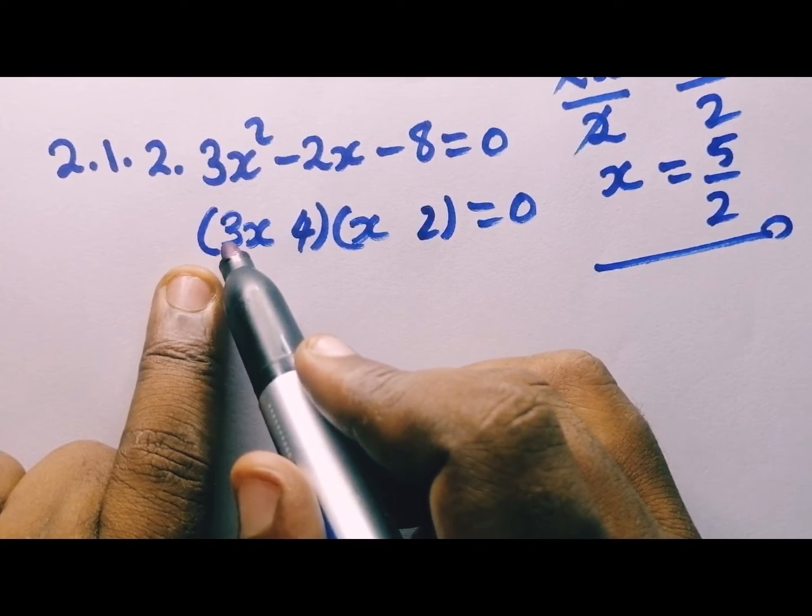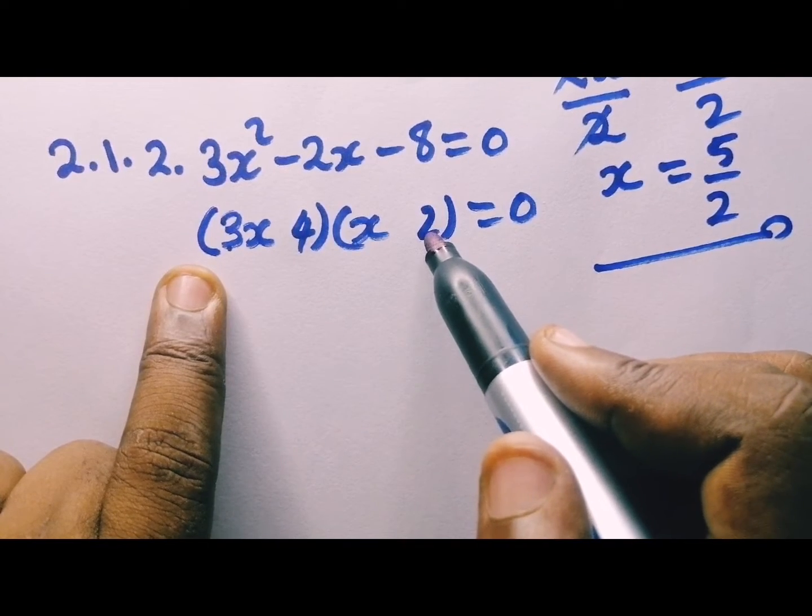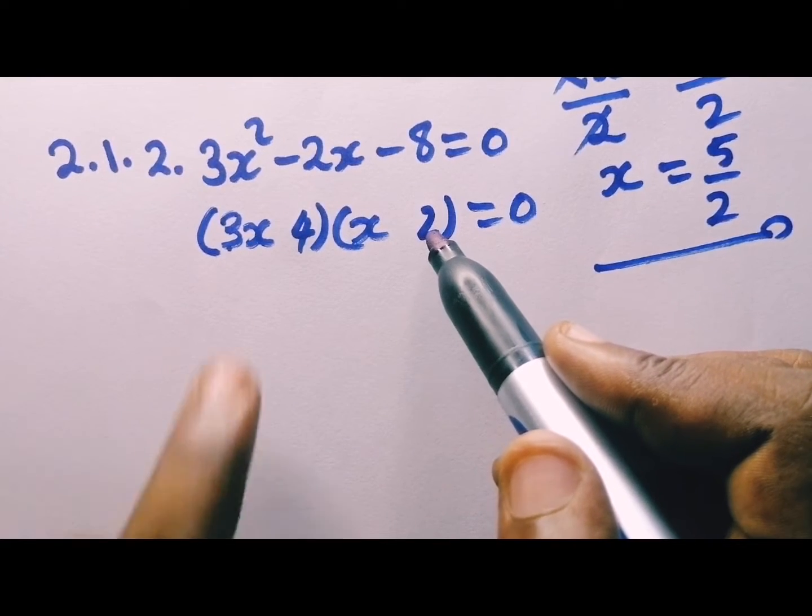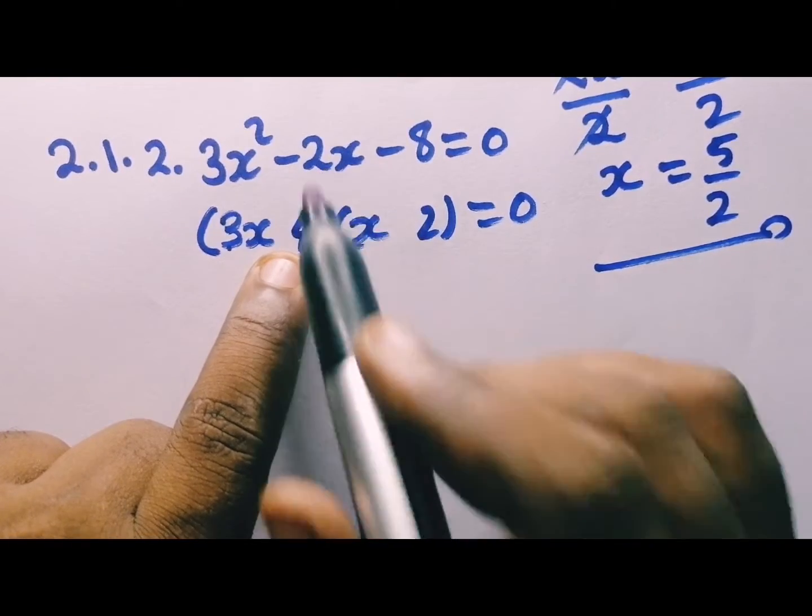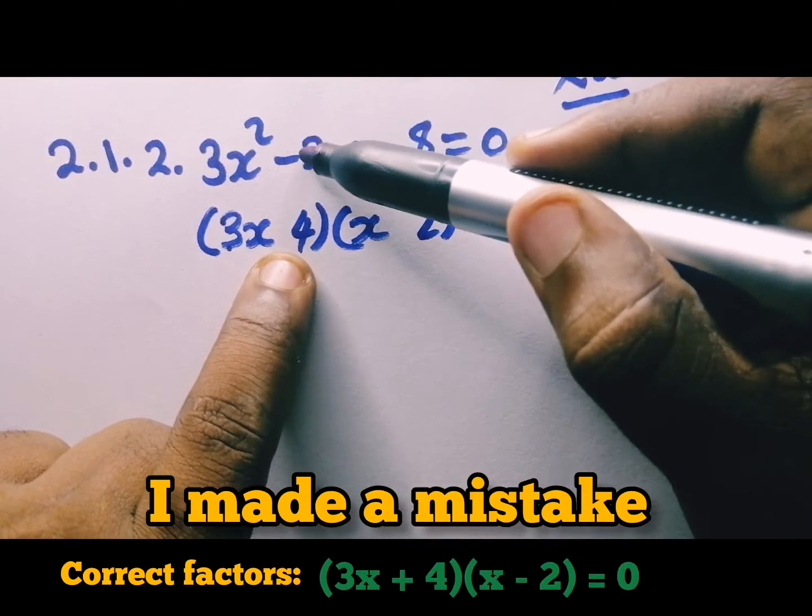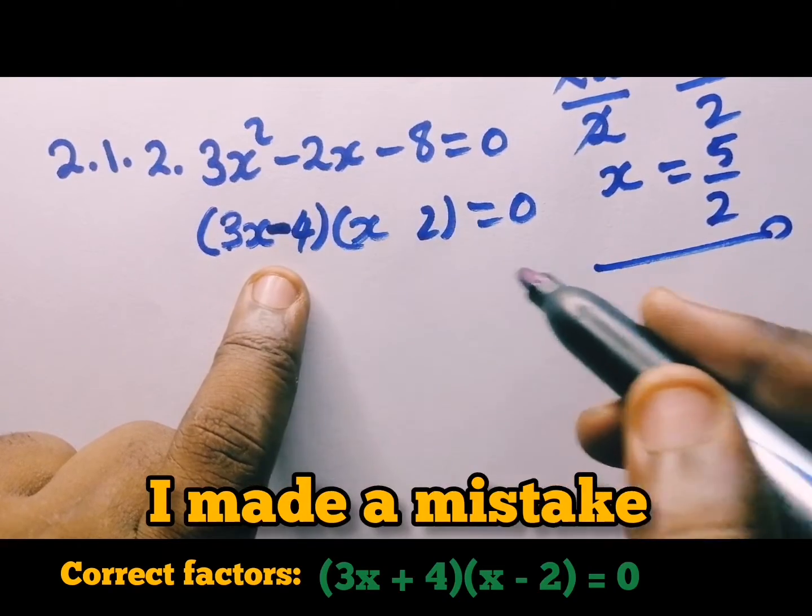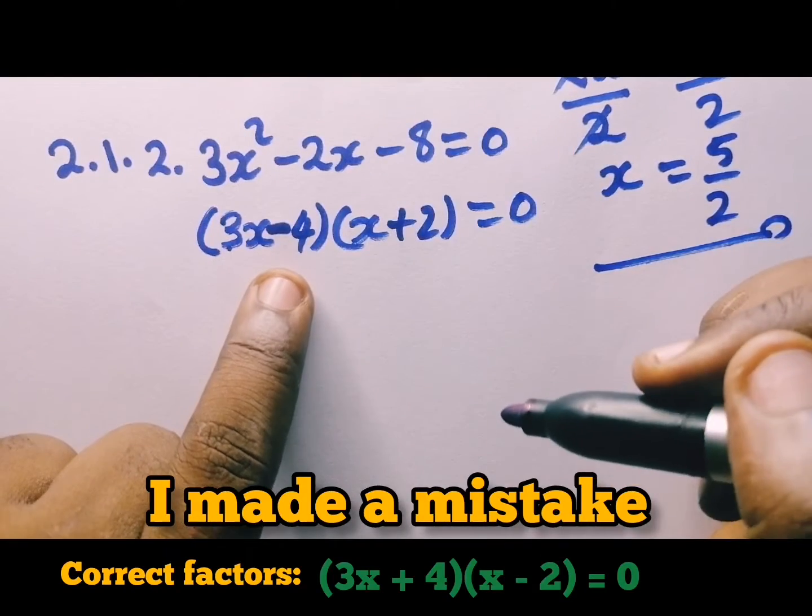We have to say 3 times 2, this is going to be 6. Then whatever you get, you have to add it here. According to the sign, we have to add it here and then you must get negative 2. The sign of the middle term is going to come here. And then in this case, we need different signs because this one is negative.